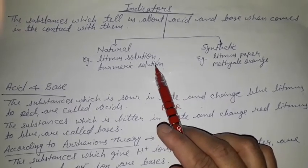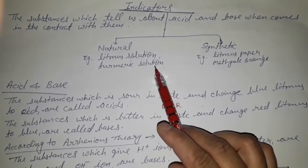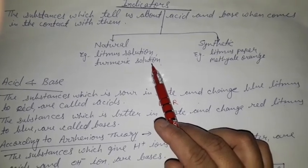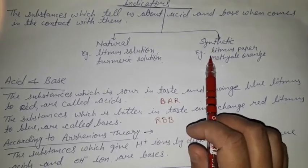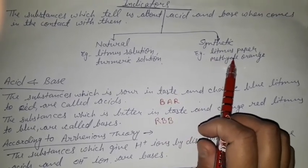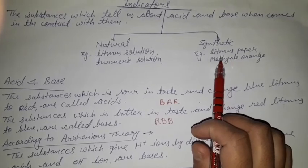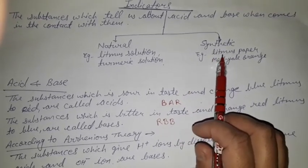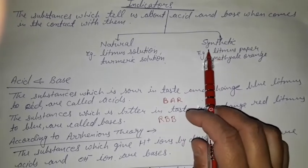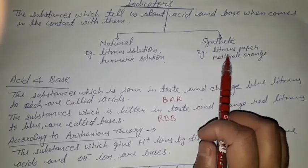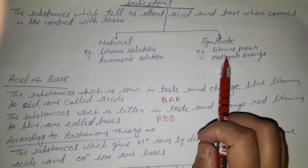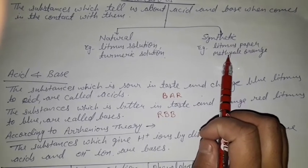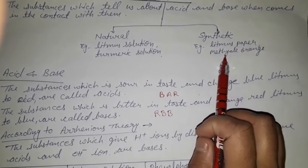Litmus solution is obtained from the lichen plant. The synthetic litmus paper, which we make from the litmus solution, is a synthetic indicator. Methyl orange and phenolphthalein are also synthetic indicators.